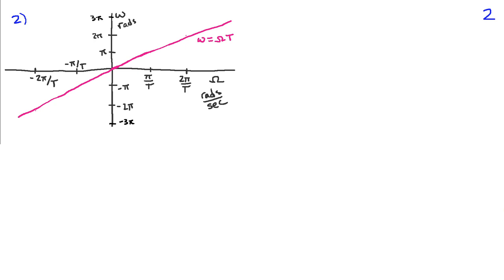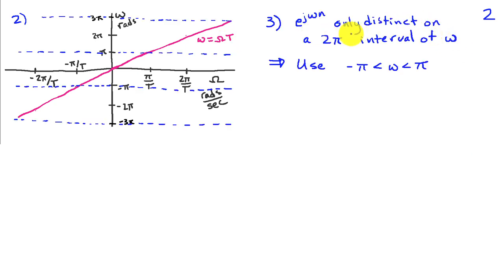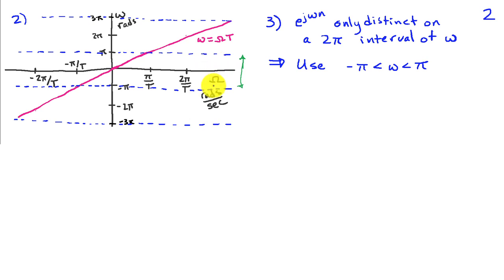Using the second fact, we can plot discrete time frequency ω as a function of continuous time frequency Ω, and we get a straight line with slope T. Since discrete time sinusoids are only distinct on a 2π interval, it's conventional in signal processing to restrict the range to minus π to π, which I've indicated on the graph by the dashed blue line. This is an interval over which discrete time sinusoids are unique.